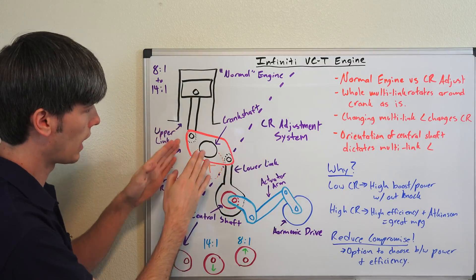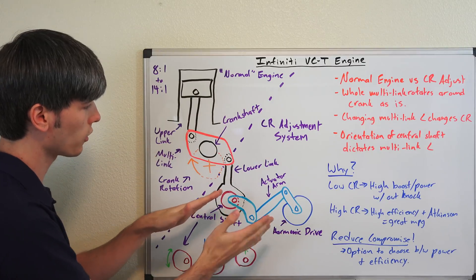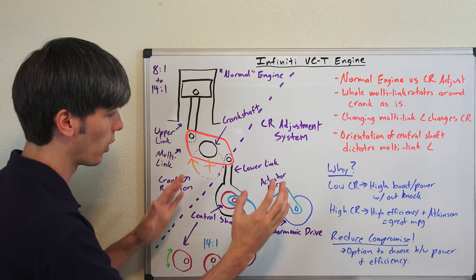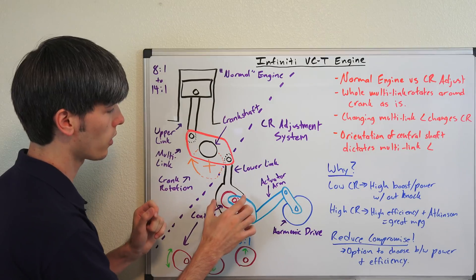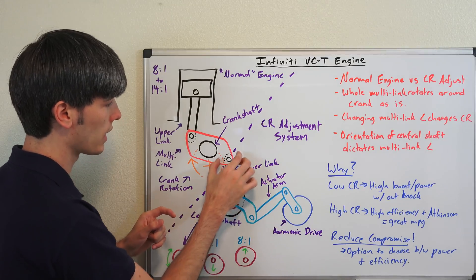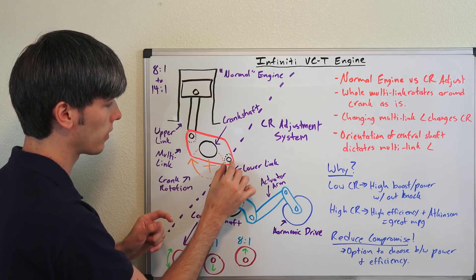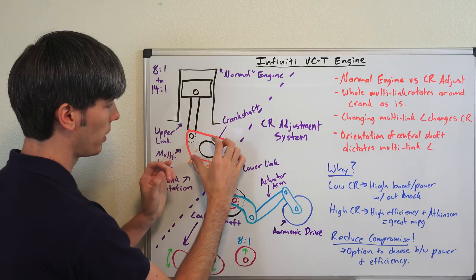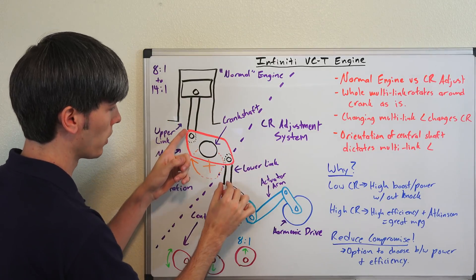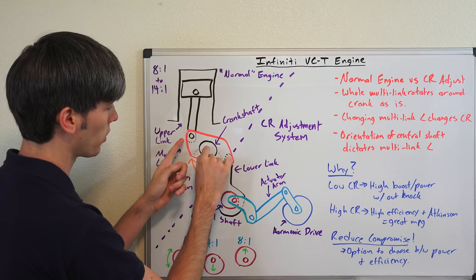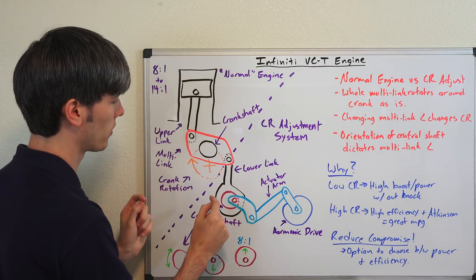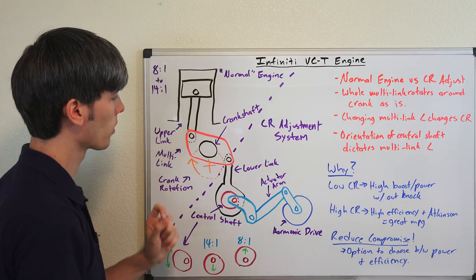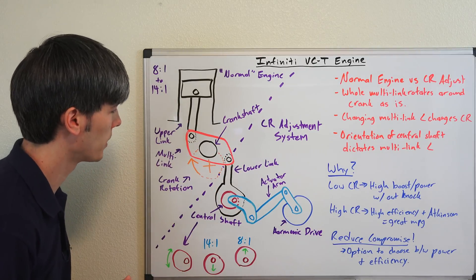So how this works on the compression ratio adjustment system, basically all you need to know about this side of the system, the most important piece, is that what you're trying to do is to move this lower link up and down. Because as you move this lower link up and down, you change the orientation of this rectangular piece, this multi-link. If you were to pull it down, you can see you'd increase the compression ratio, because it pivots about this point, pushes the piston up. And if you were to push it up, you would pull the piston down, decreasing the compression ratio at top dead center.